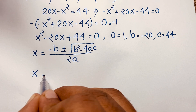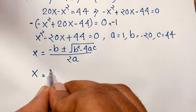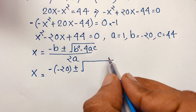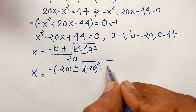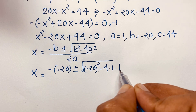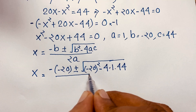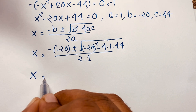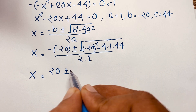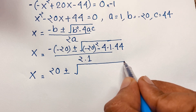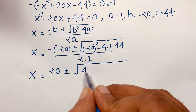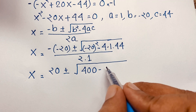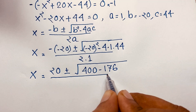Substituting values: x equals minus (negative 20) plus or minus square root of (negative 20 squared minus 4 times 1 times 44), over 2 times 1. This simplifies to x equals 20 plus or minus square root of (400 minus 176) over 2, which gives square root of 224 over 2.